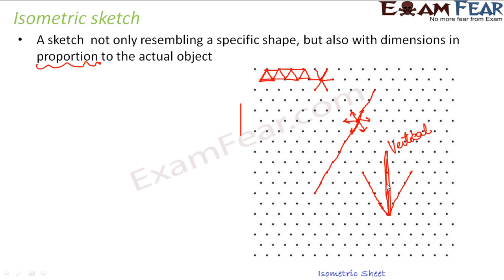The reason we do not represent the horizontal dimensions exactly along the horizontal axis is that if we drew everything exactly vertical or horizontal, it would not give the 3D effect. So, in order to give the 3D effect, the vertical lines are drawn vertically, but the horizontal lines are drawn at an angle to the baseline. This gives the three-dimensional view, and it will become more clear as we start making isometric sketches of actual three-dimensional objects.